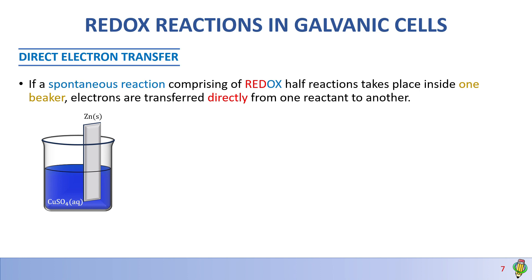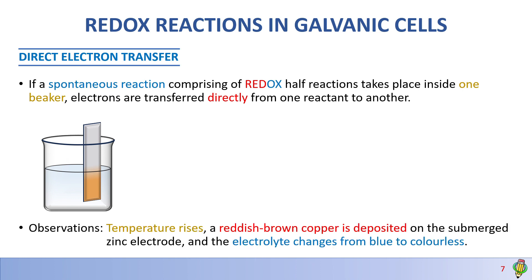Let's consider this reaction between copper sulfate aqueous solution and zinc metal. In a practical environment, we would notice a temperature rise, and we can see there's a reddish-brown metal deposited on the submerged zinc electrode. This metal is copper, and the electrolyte will change from blue to colorless.